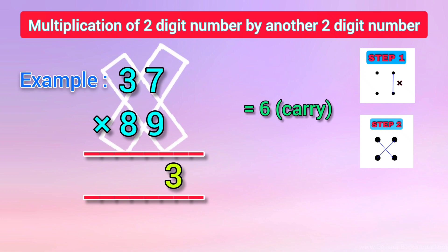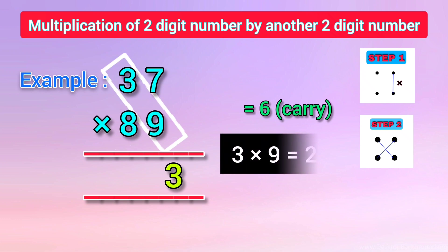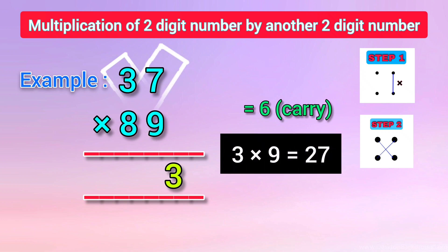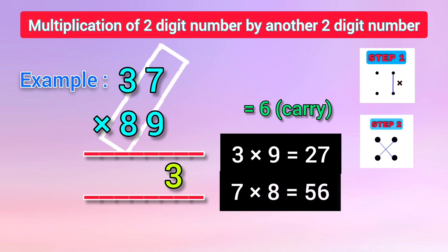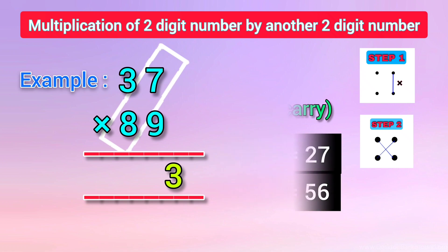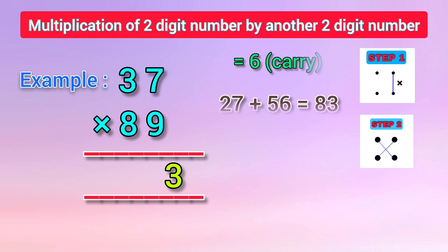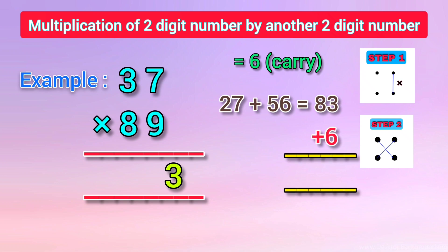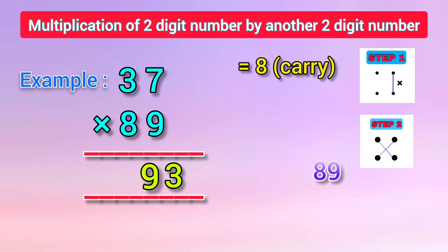In the second step, we cross-multiply the digits. When 3 is multiplied by 9, we get 27, and when 8 is multiplied by 7, we get 56. We add both products: 27 plus 56 is equal to 83. Now we add the 6 carried over from the previous step: 83 plus 6 is equal to 89. We put down 9 and carry 8 to the next step.